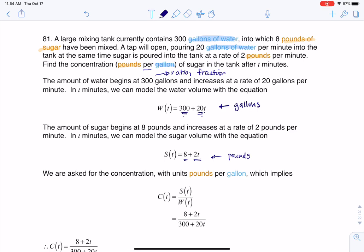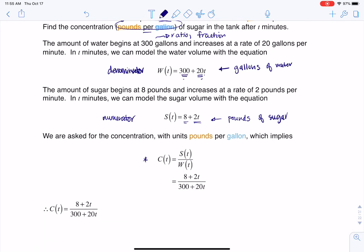Alright, so here's the gallons of water and this is the pounds of sugar, and I was asked to get the concentration which is pounds per gallon. So the sugar will become my numerator and the water is going to become my denominator when I go to make this ratio. The concentration is, if I look at the units again, pounds in ratio to gallons, and then I'm just substituting in those particular equations. So C(t) = (8 + 2t) / (300 + 20t).